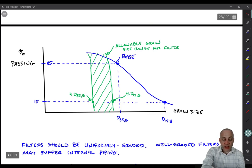So here's the D85 size of the base, and here's the D15 size of the base. So D15, D85. Once we have those, we can now make a range of our filter.